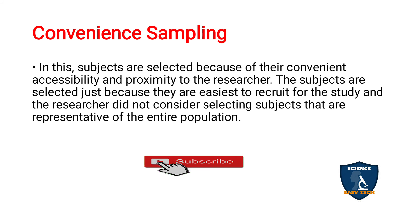Convenience sampling — here subjects are selected based on their convenience, accessibility and proximity to the researcher. Whoever is very close and easily accessible to the researcher is selected. The subjects are chosen simply because they are easiest to access. The researcher does not consider whether the subjects are representative of the entire population — whoever is convenient and nearby, they are taken according to the researcher's convenience. That is why it is called convenience sampling.